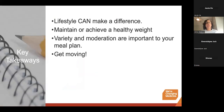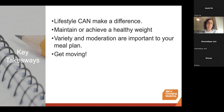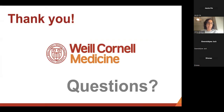In summary, lifestyle can make a big difference in reducing risk for type 2 diabetes and in managing diabetes. Maintaining or achieving a healthy weight is super important — it doesn't take losing 50 pounds; losing just 5–7% of body weight when overweight or obese makes all the difference. Variety and moderation in food choices are most important; the plate method is an easy way to balance meals. And lastly, get moving — physical activity makes all the difference in staying healthy, reducing risk for diabetes, and managing it.